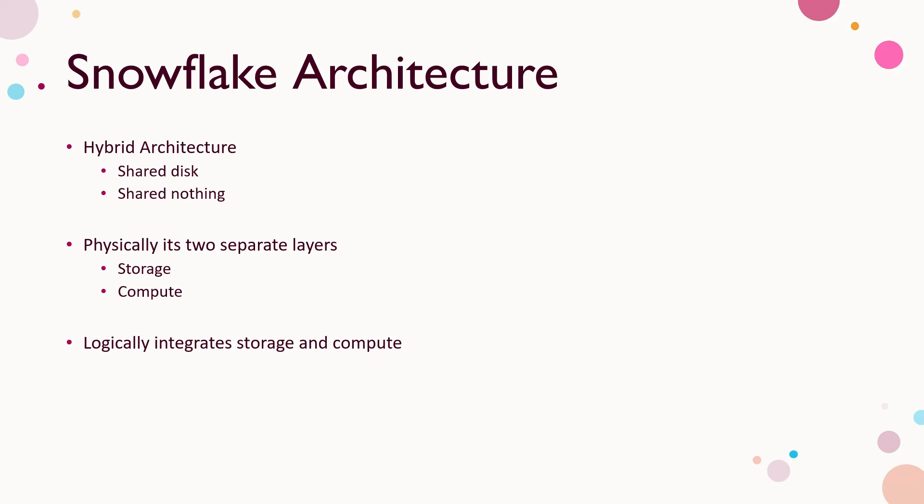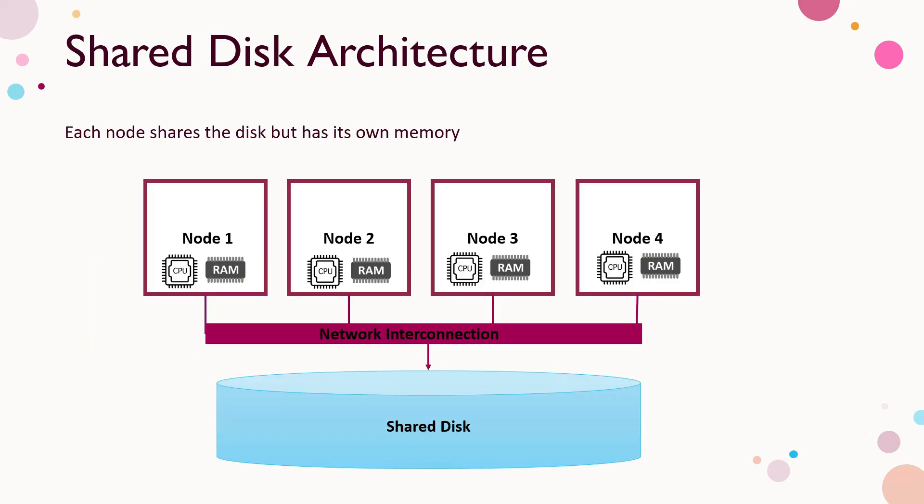When we talk about Snowflake architecture, it's a hybrid architecture. When I say hybrid, it means it is a combination of shared disk and shared nothing architecture. Physically there are two separate layers. At a broad level, Snowflake has three layers: cloud services, compute, and storage. They can independently scale as per need, but logically they are integrated — we will see how in the coming slides.